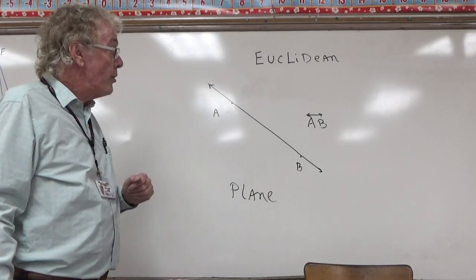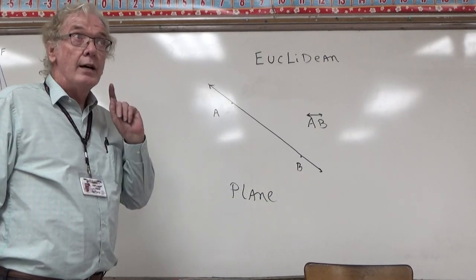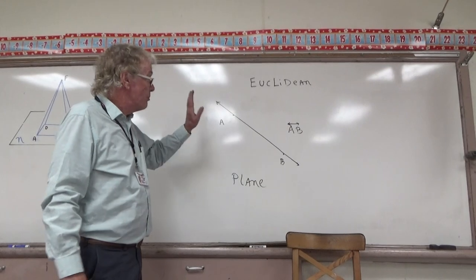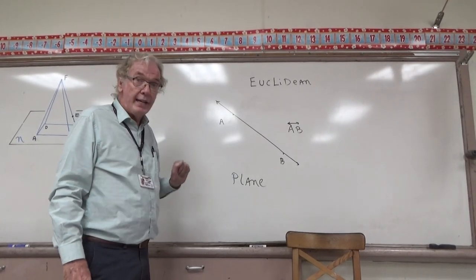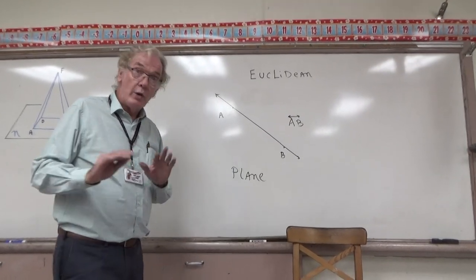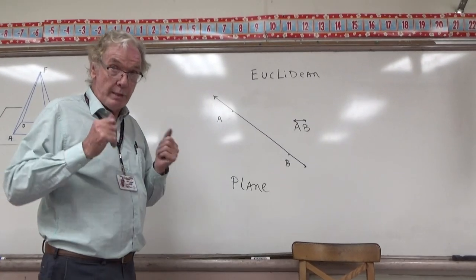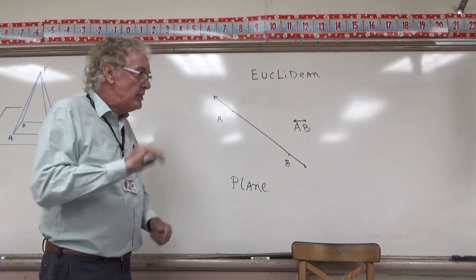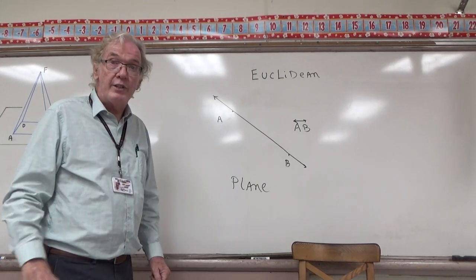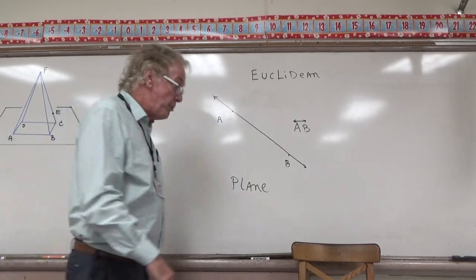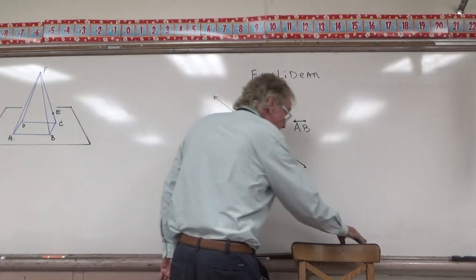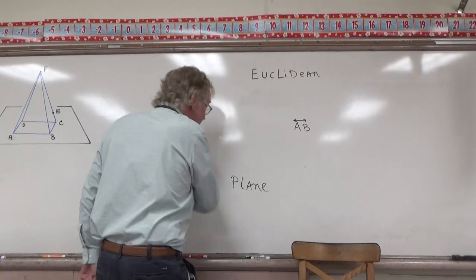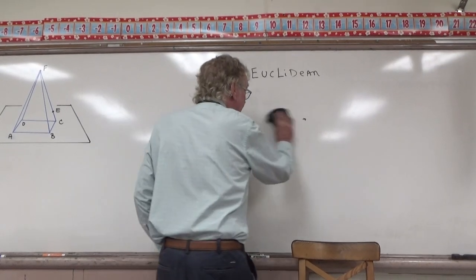So there are three undefined terms in geometry: point, line, and plane. We should know a lot about them, we should be able to describe them and name them, but we won't have a definition for them. There are some terms that we will have definitions for, so let's talk about those now.